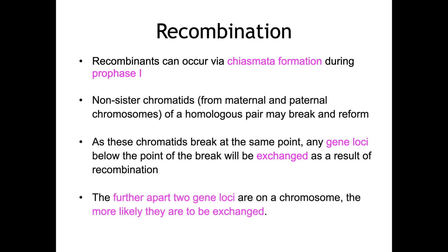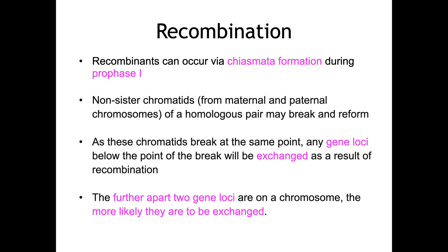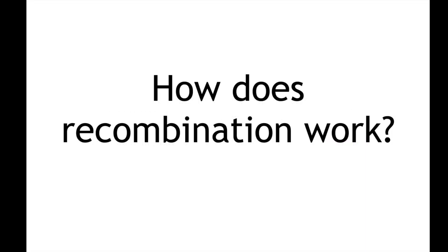The further apart the two genes are on the chromosome, the more likely they are to be exchanged. So let's look more closely at how recombination works. In order to do so, we need to revisit how gametes are formed normally by meiosis.